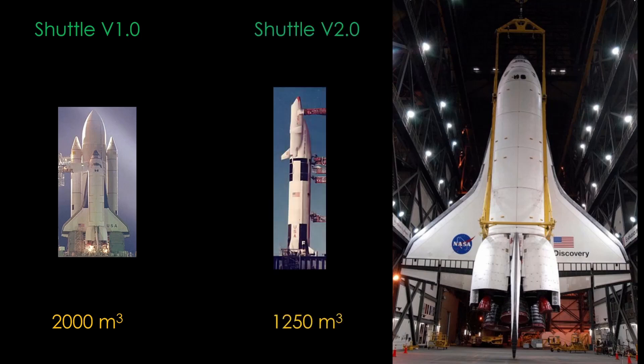If we get rid of the solid rockets and put a first-stage booster underneath the shuttle, we can cut down the requirements quite a bit, down to perhaps 1,250 cubic meters.